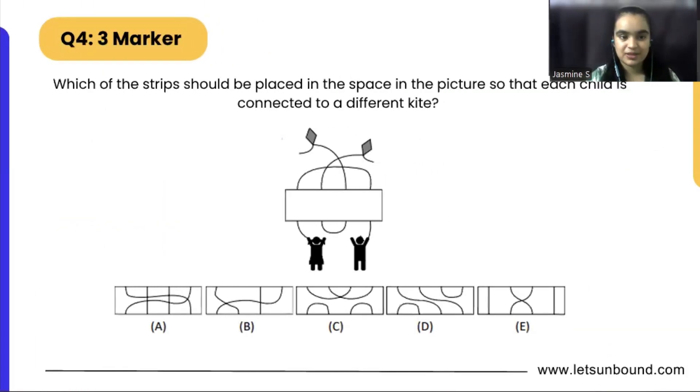Which of the strips should be placed in the space in the picture so that each child is connected to a different kite? Okay, so it should not overlap, they should have two different kites, right? What you can do, you can quickly try solving each and every option which is there. So let's start with option A, okay.